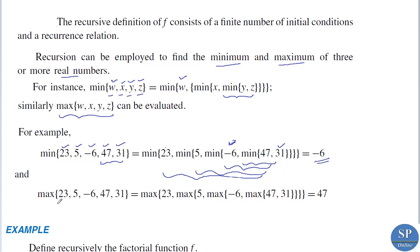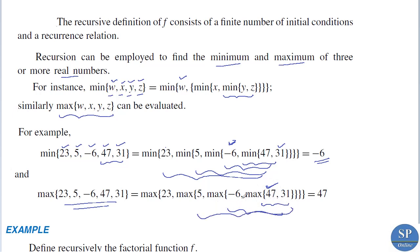Similarly, the maximum of these numbers is obtained using the same approach. First, max(47, 31) = 47; then max(47, -6) = 47; then max(47, 5) = 47; and finally max(47, 23) = 47. So 47 is the maximum of these numbers.